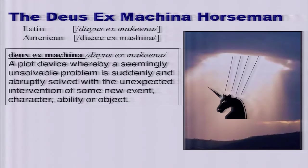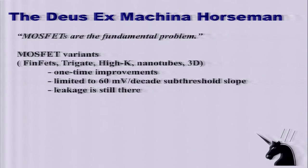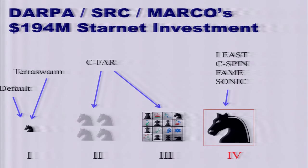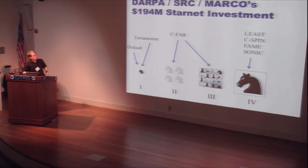The fourth horseman might interest a lot of you — it's the magical intervention from God, which from the architect's perspective is the device people coming along with a replacement for the MOSFET. MOSFETs have 60 millivolts per decade subthreshold swing and we're searching for better alternatives. Things that have appeared on the architect's roadmap are NEMS — nano-electromechanical relays, basically miniaturized mechanical switches — and TFETs. DARPA recently funded the StarNet program, and you can classify each of its centers into a horseman. A lot of the focus of the DARPA/MARCO StarNet program is on this fourth horseman — new devices — but there is some attention being applied to the other three horsemen as well.